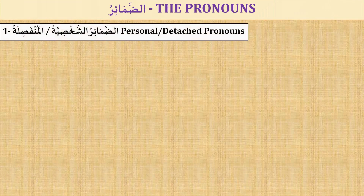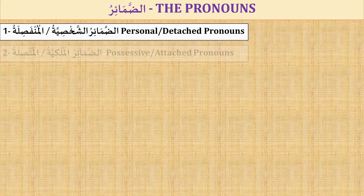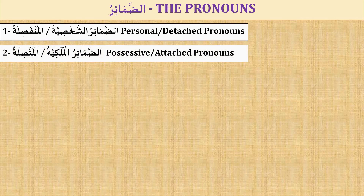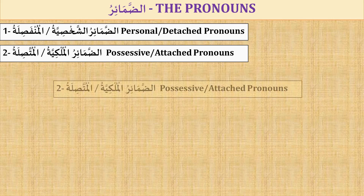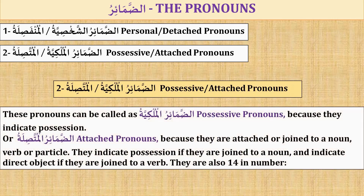Previously we learnt that there are two types of Arabic pronouns. First, al-dhamair al-shakhsiyyah wal-munfasilah, personal or detached pronouns. Second, al-dhamair al-mulkiyyah wal-muttasilah, possessive or attached pronouns. In our previous lesson we learnt the first one in detail. Now we are going to learn the second one — al-dhamair al-mulkiyyah wal-muttasilah, possessive or attached pronouns. They are also 14 in number.